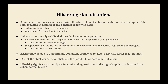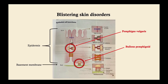This cartoon of the skin denotes the epithelial cell junctions. The two we're concerned about for this talk are the desmosomes, which link keratinocytes, and the hemidesmosomes, which link keratinocytes to the basement membrane.